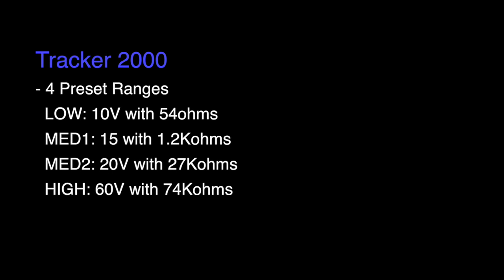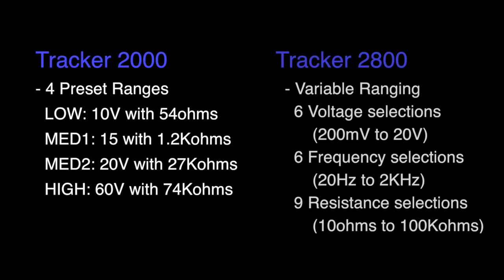Huntron realized this issue early on and developed the first variable range tracker. Variable ranging allows the 2800 user to configure the range settings of voltage, frequency, and resistance independently, providing over 100 possible range combinations.